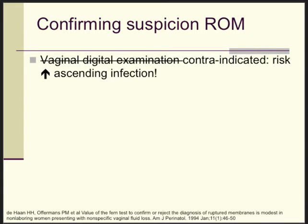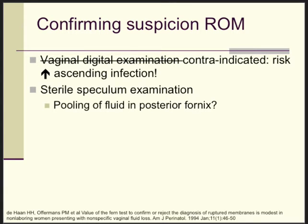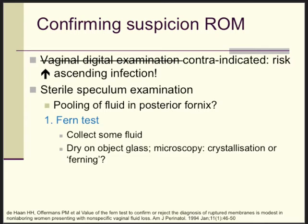Confirming the suspicion of rupture of membranes — important: do not do a digital vaginal examination, even with sterile gloves, because you might bring infection and mixed germs from the vagina higher up into the cervix, and the clock of infection starts ticking. So it's contraindicated. We use a sterile speculum examination with the lady in the dorsal lithotomy position, and we try to find out whether we can see some fluid leaking from the cervix into the speculum or into the posterior fornix. If so, we can take a little bit of fluid, dry it on an object glass for about 10 minutes, put it under the microscope, and look for the typical crystallization — or ferning.